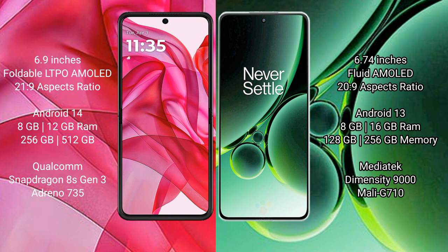OnePlus Nord 3 comes with 8GB and 16GB RAM, and 256GB internal storage, with a MediaTek Dimensity 9000 processor, starting at 8GB, 710.